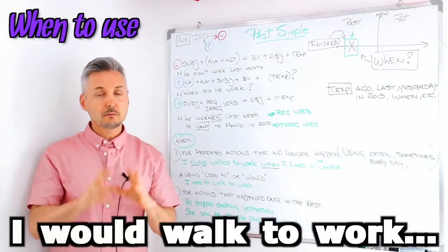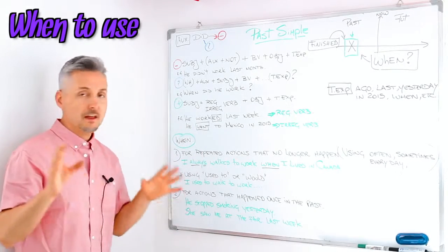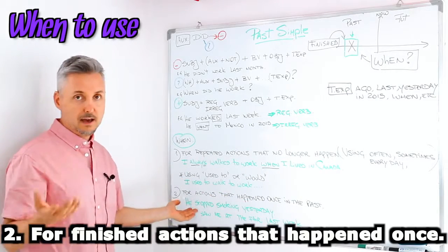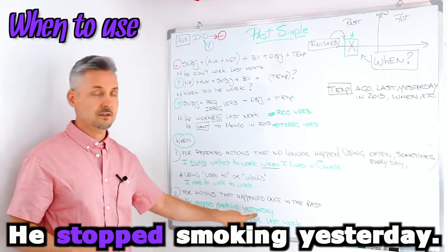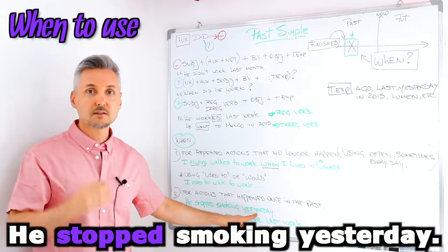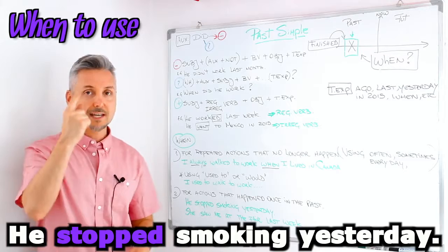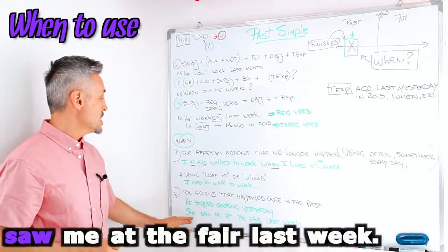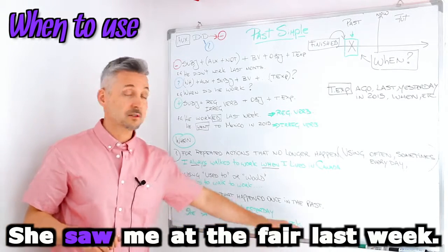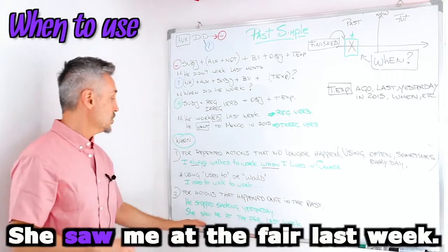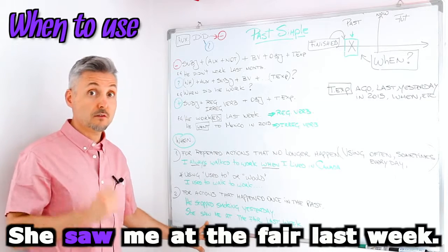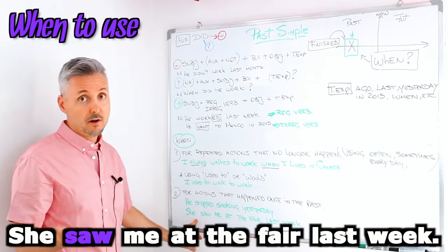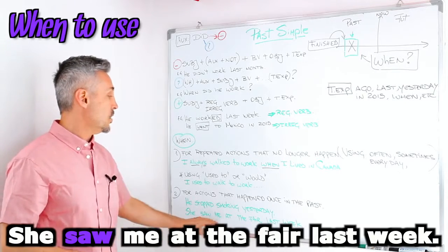This is the most difficult part of the past simple. Like I said before, we use it for a finished action that happened only once in the past. Two examples: 'He stopped smoking yesterday' — in the past he smoked 25 cigarettes a day, but yesterday he decided to stop. Another example: 'She saw me at the fair last week.' 'Saw' is the past of the irregular verb 'to see' — you can check the list of irregular verbs in your grammar book or dictionary.